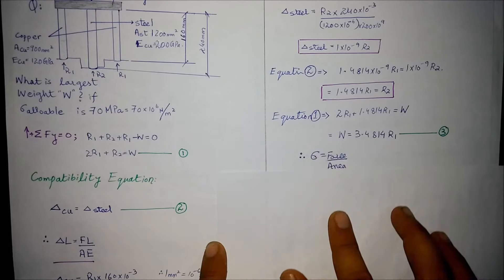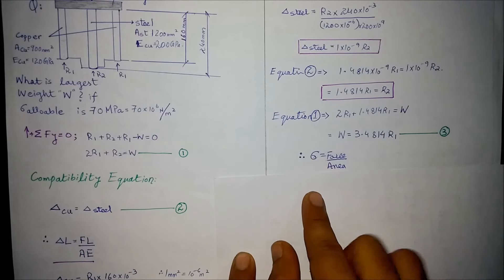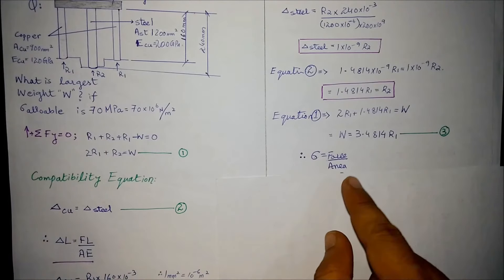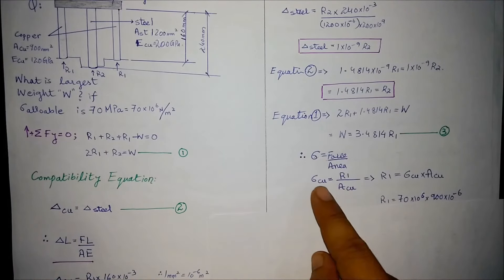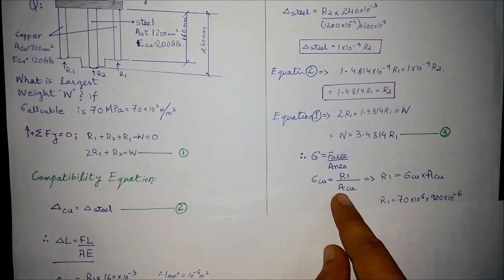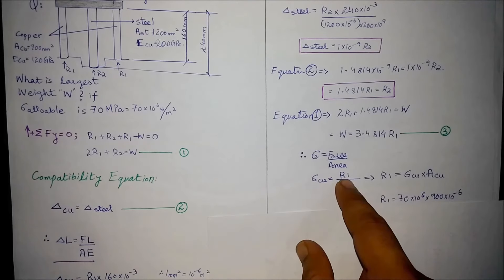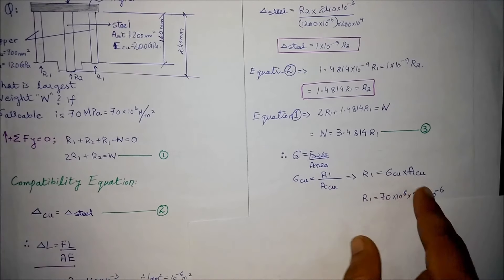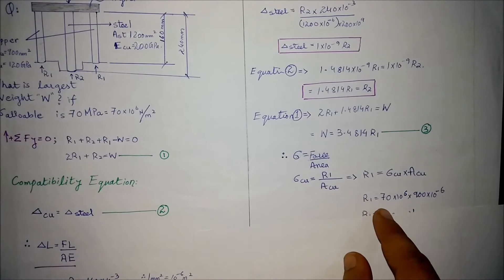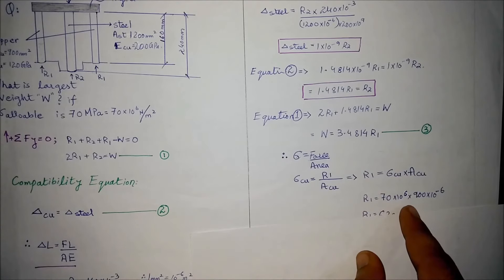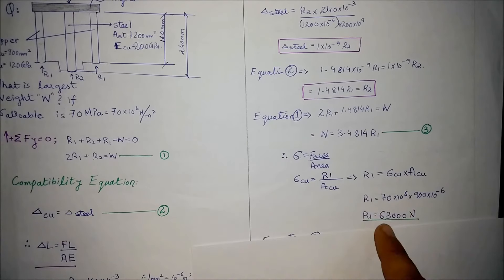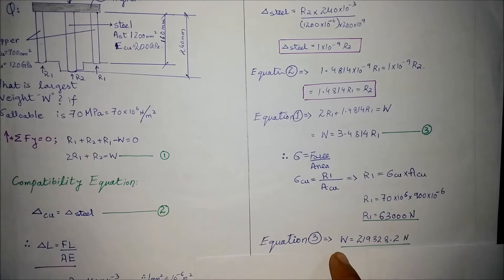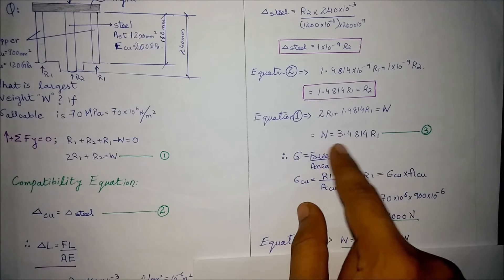We know that stress equals force over area. With the stress as 70 megapascals, R1 equals stress in copper times the area of copper. R1 equals stress, given as 70 megapascals, into area of copper. R1 comes out to be 63,000 newtons.